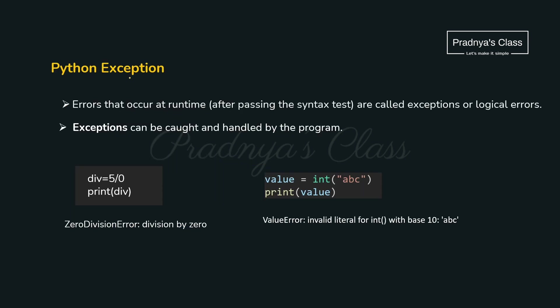Moving ahead, let's understand what is an exception. First the program will pass through the syntax test. If syntax is correct, we may still get an error — those types of errors are called exceptions. It will halt the program abruptly, so it is the duty of the programmer to catch and handle the exception.